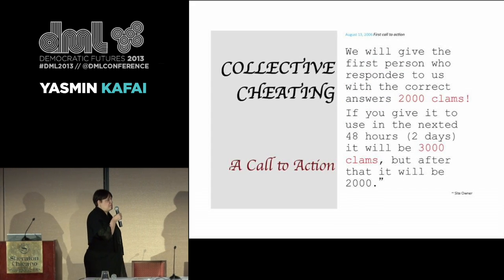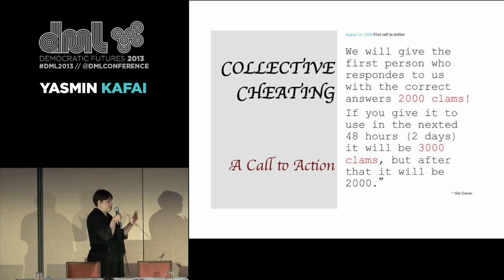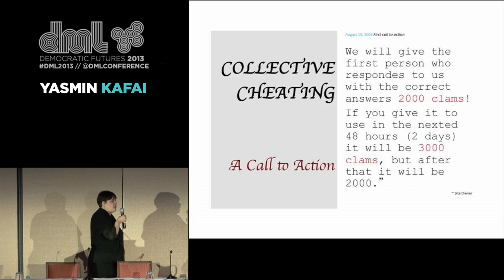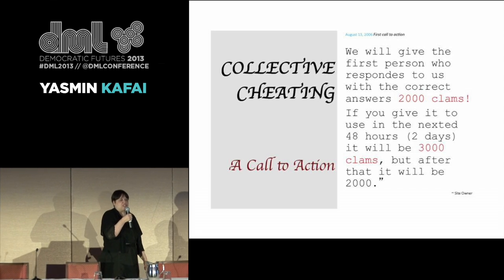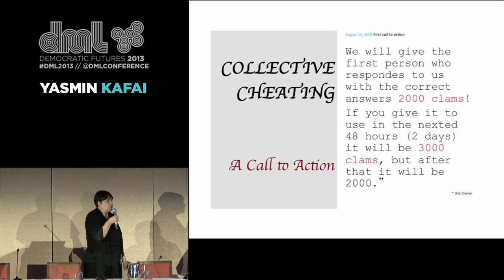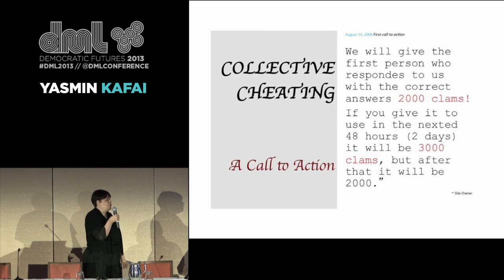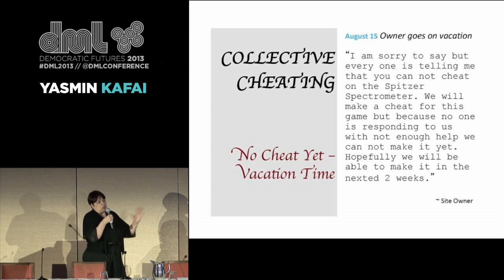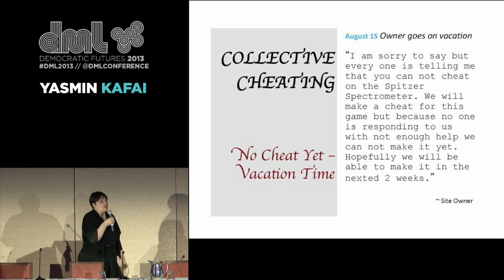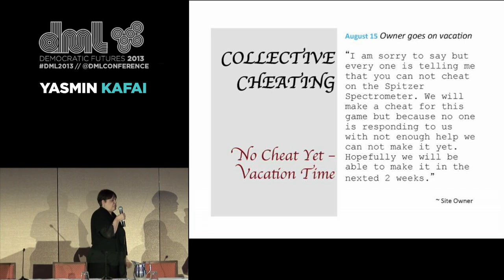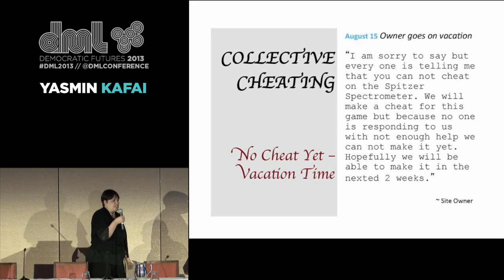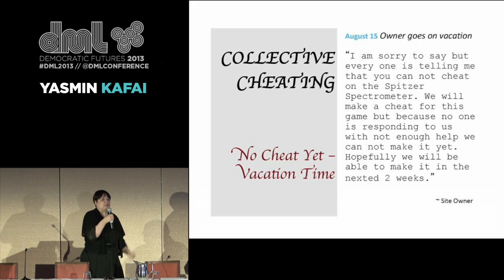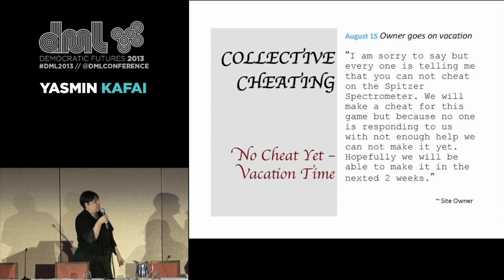They even read up on spectrophotometry on the internet and couldn't find anything, so they called on people to collectively develop a cheat so that everybody could do it. To incentivize other players on Whyville, they even offered clams — 2,000 to 3,000 clams, which is quite hefty given that the upper edge of a daily salary is about 100 clams on that virtual site. Two days passed, nobody got the award, and the owner said nobody can find the cheat, and went on vacation.